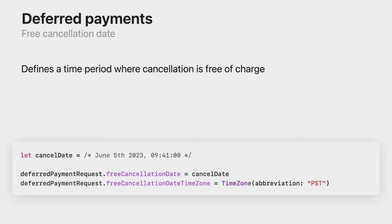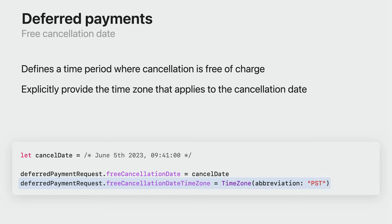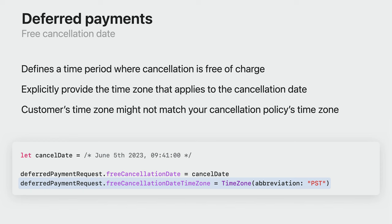Because of this, both the date and time are important pieces of information. You need to explicitly state the timezone the cancellation policy applies in. We have provided a separate property to support this. In the example, we have specified that the timezone is Pacific Standard Time. This is important because your customer's timezone might not match the cancellation policy's timezone — for example, when someone is based in the United Kingdom booking a hotel in the United States.